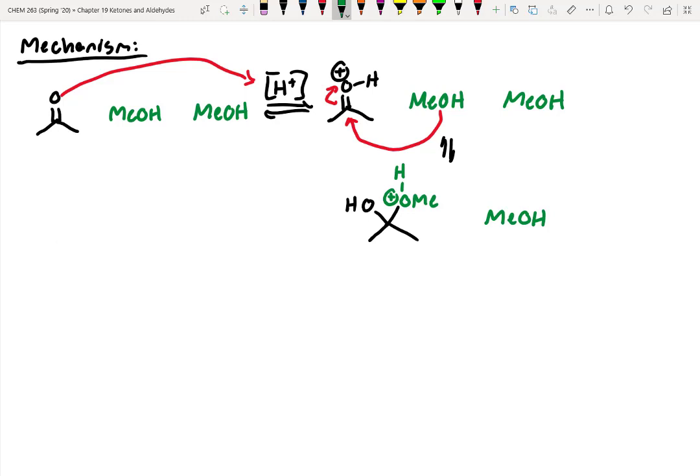And then we also have our second equivalent of methanol over here. Alright, so what we need to do is we need to remove this proton to get to a neutral intermediate. So what I'm gonna do is I'm just gonna write minus H+ to indicate that we need to get rid of that proton. Alright, so if we do that, we should get to a nice neutral product. And then we're also going to have our second equivalent of methanol floating around.